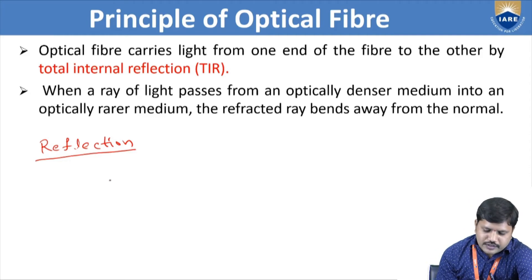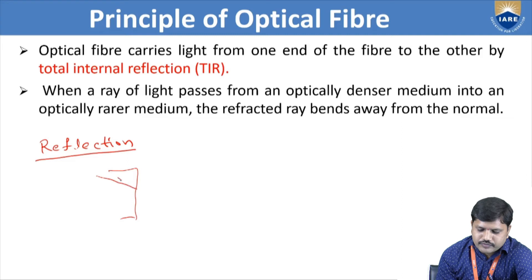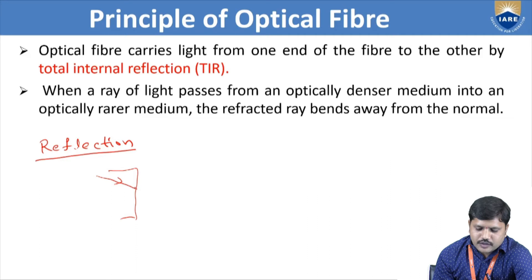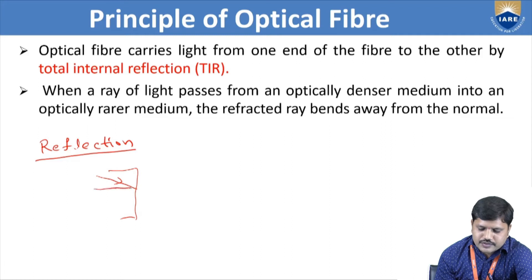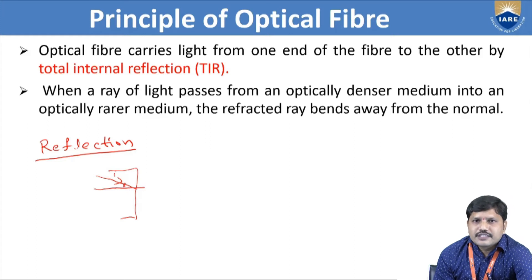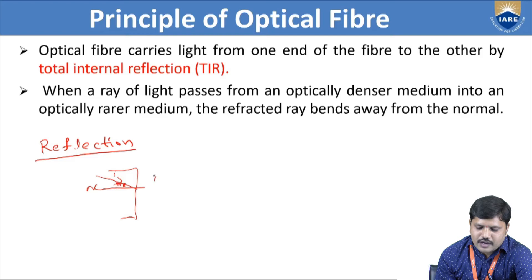For example, the light ray is incident on a region with some angle. Where it is incident, at that point we draw one normal line which is perpendicular to our surface. The first ray is known as our incident ray, and the incident ray is making some angle with the normal line N, that is taken as theta i — otherwise simply known as angle i, the incident angle.